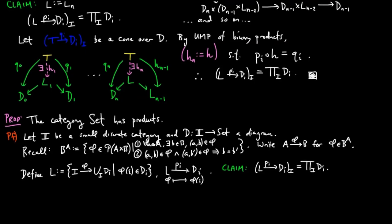To do this we again show that it enjoys the universal mapping property of the product. So suppose that q sub i from t to d sub i is a cone over D.